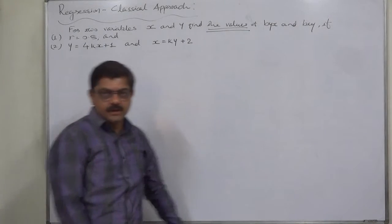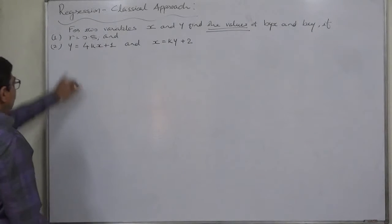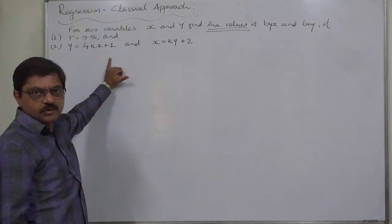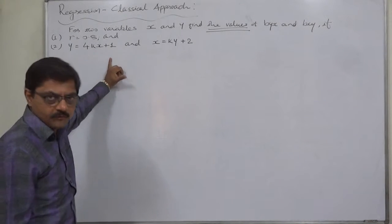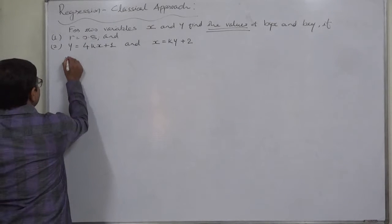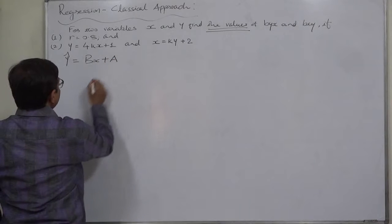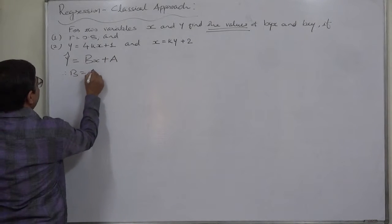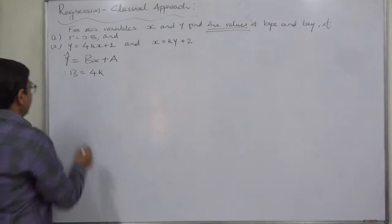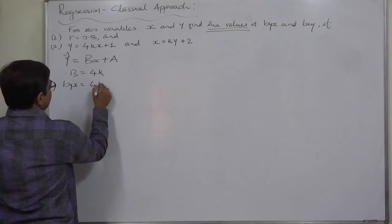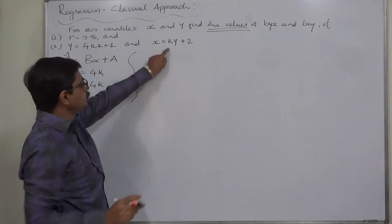Let's do it. For y = 4kx + 1, the subject of the equation is y, which means we can identify this as the line of regression of y on x. Comparing it with the standard form y = bx + a, we get b = 4k. In the line of regression of y on x, b stands for byx, so byx = 4k.